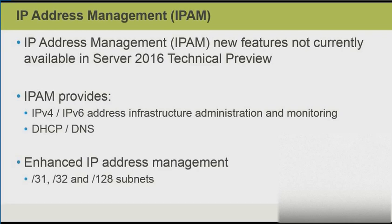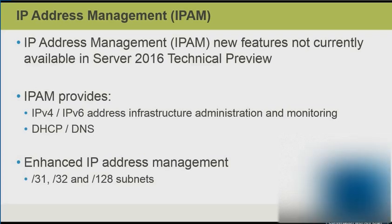For example, a /31 subnet means there are 31 bits in the subnet mask, and that might be used for point-to-point switch connections, whereby we only really need two hosts on that subnet.